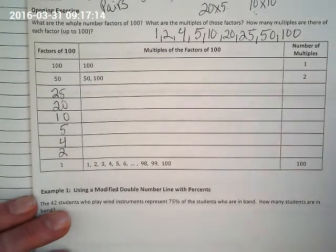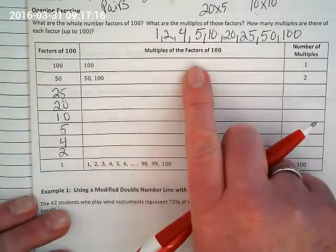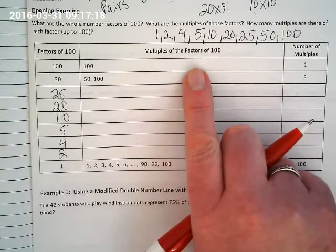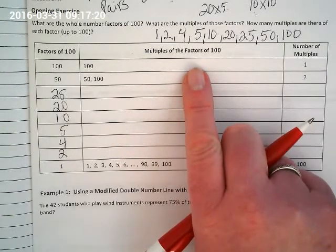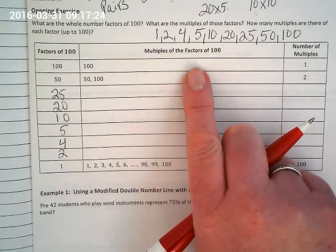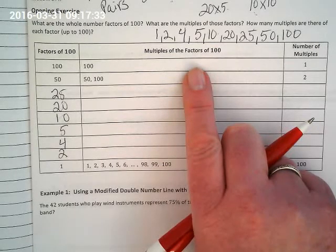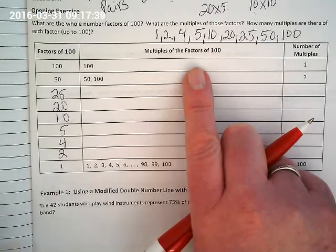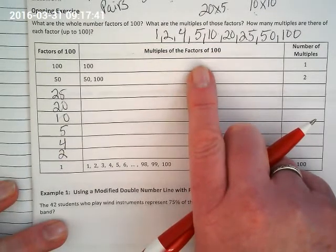And now we're going to do in this column the multiples of the factors of 100. You guys didn't learn the word multiple, but you learned what they were when your elementary teachers had you count up. So for instance, the multiples of 2 are 2, 4, 6, 8, 10. Could we keep going? Multiples of 5 would be 5, 10, 15. Okay? And we're going to list them up to 100.